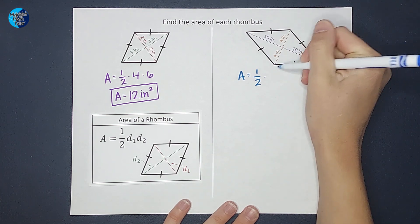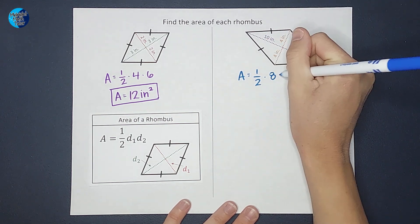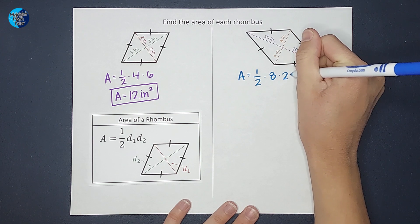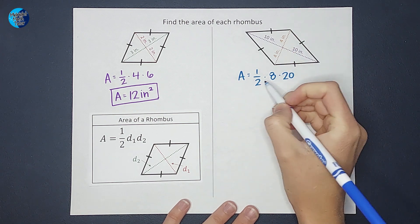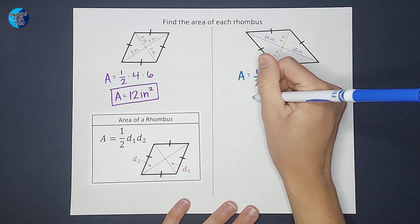So we're going to say four plus four here is my first diagonal. So eight. And 10 plus 10 is going to be my second diagonal. So 20. Okay. And then one half times 20 would give me 10 times 8 would give me 80.